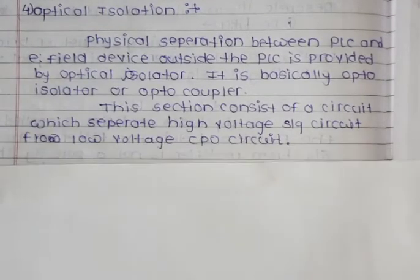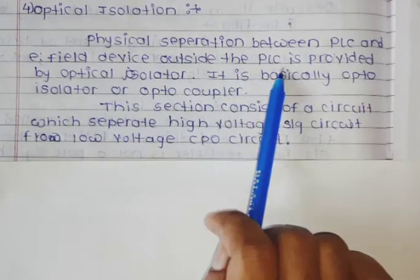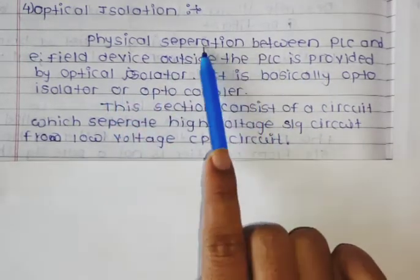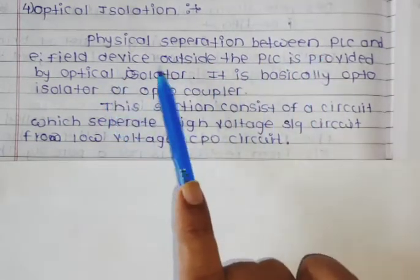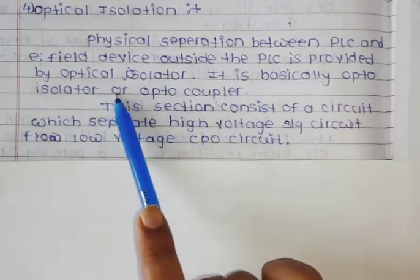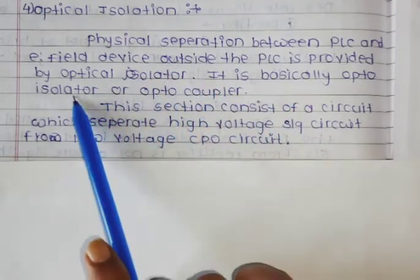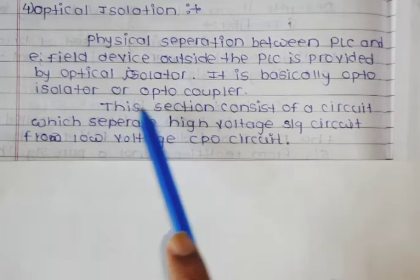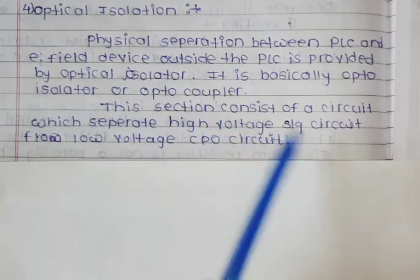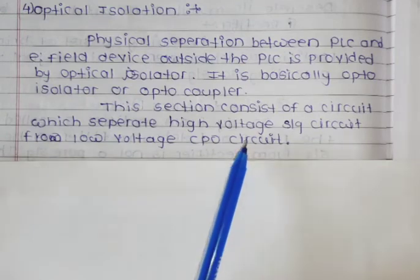After that, we see optical isolation. The physical separation between the PLC and the field device outside the PLC is provided by the optical isolator. It is basically an opto-isolator or opto-coupler — both are the same. This section consists of a circuit which separates the high voltage signal circuit from the low voltage CPU circuit.